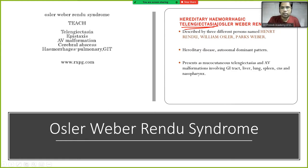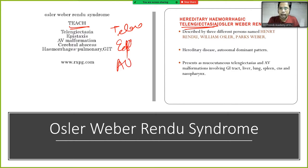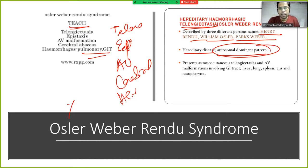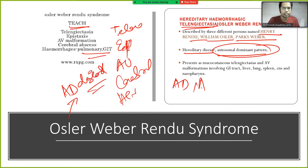A mnemonic for Osler-Weber-Rendu syndrome is TEACH: Telangiectasia, Epistaxis, Arteriovenous malformation, Cerebral abscess or hemorrhage, and involvement of pulmonary or GI tract. It was described by Henry Rendu, William Osler, and Parks Weber. It is a hereditary autosomal dominant disease presenting as mucocutaneous telangiectasia and AV malformation involving the GI tract, lungs, CNS, and nasopharynx.